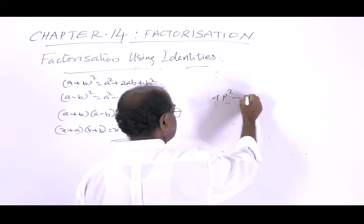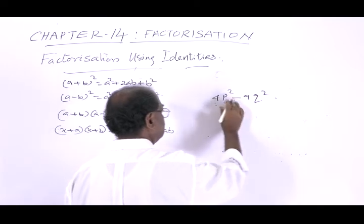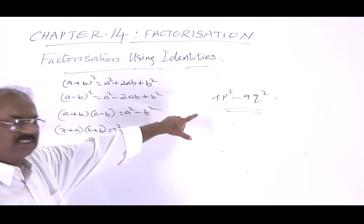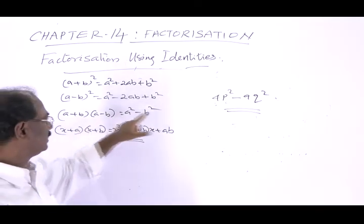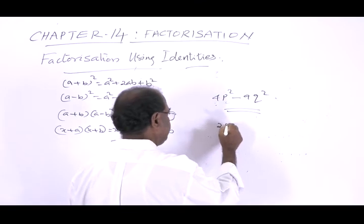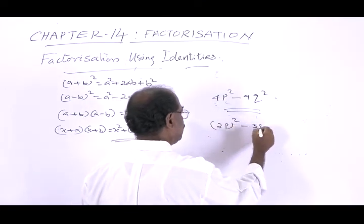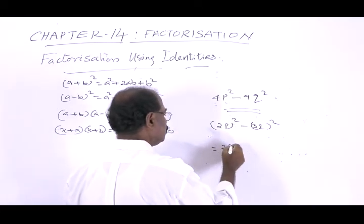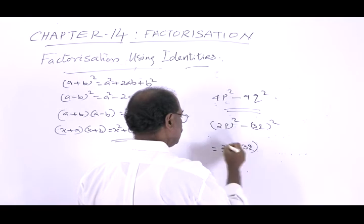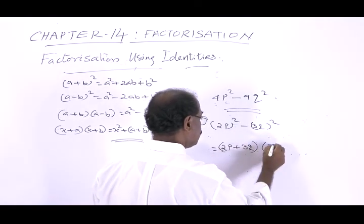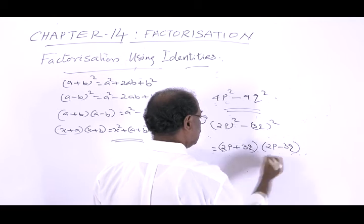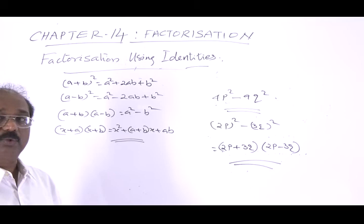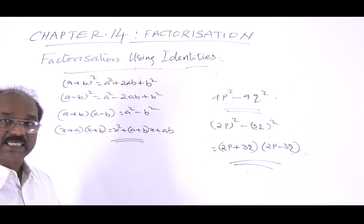Now consider 4p² - 9q². We can immediately recognize this using the identity a² - b². This equals (2p)² - (3q)², which is of the form a² - b² = (a + b)(a - b). So this equals (2p + 3q)(2p - 3q). The factors are (2p + 3q) and (2p - 3q). That is the factorization.